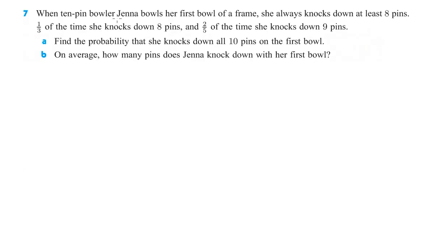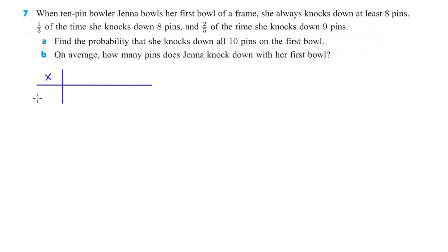Looking at number seven. When ten-pin bowler Jenna bowls her first bowl of a frame, she always knocks down at least eight pins. One third of the time she knocks down eight pins, two fifths of the time she knocks down nine pins, and the rest of the time she knocks down all the pins. Find the probability that she knocks down all 10 pins on the first bowl. I'm going to make a little probability table.